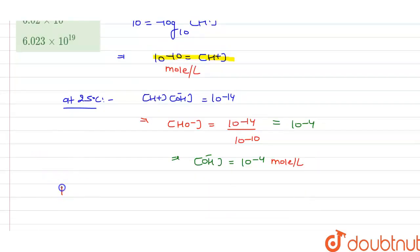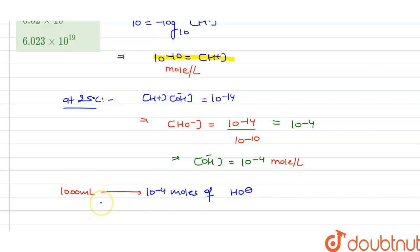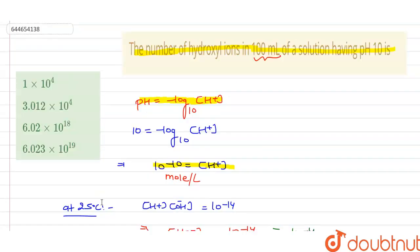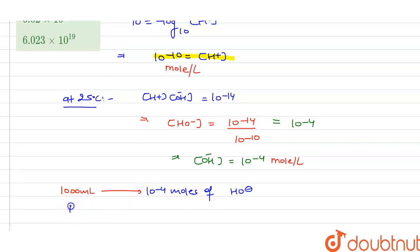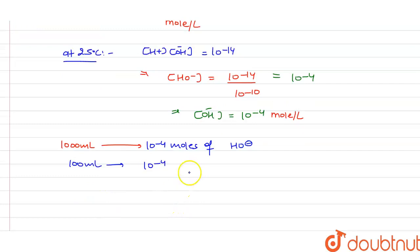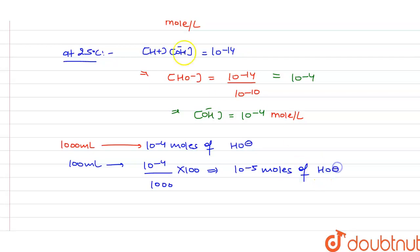This indicates that in one liter or 1000 ml there is a presence of 10 to the power minus 4 moles of OH⁻ ion. Since the question asks about 100 ml, it will be 10 to the power minus 4 divided by 1000, multiplied by 100. On solving, we get 10 to the power minus 5 moles of OH⁻ ion present in 100 ml of the solution.